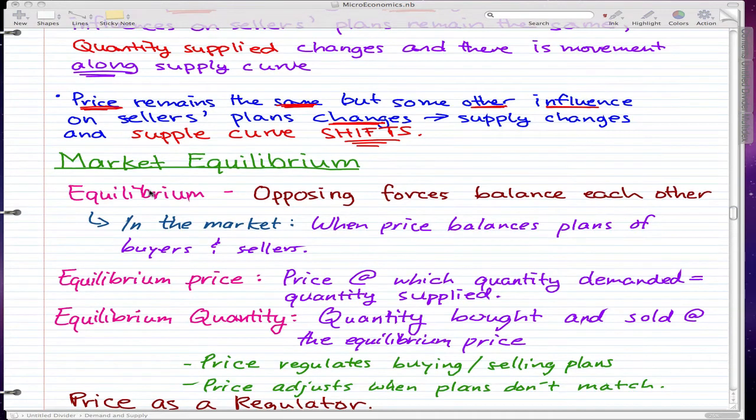So market equilibrium. In this video, I'll be talking about equilibrium. The first thing I want you to know or remember is that when the price of a good rises, the quantity demanded decreases and the quantity supplied of that good increases.